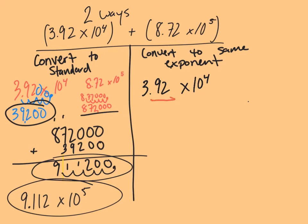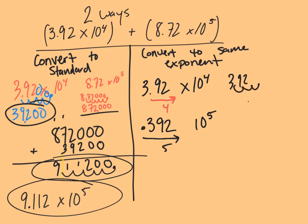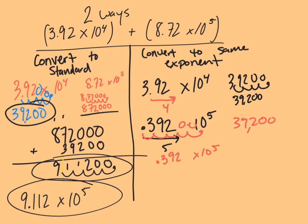What I need to know is that in this number, I'm moving the decimal four spaces to the right. If I was going to end up at the exact same number but write this as 10 to the fifth, I would just need to slide my decimal point over one more to the left. Because now if I move this decimal five spaces to the right, I get the exact same number. So if I consider this 0.392 times 10 to the fifth, I now have it in 10 to the fifth form and can add it to the other number, since that's also in 10 to the fifth form.